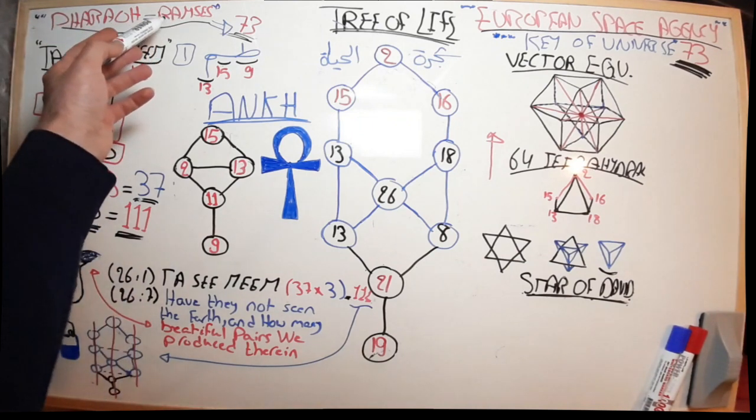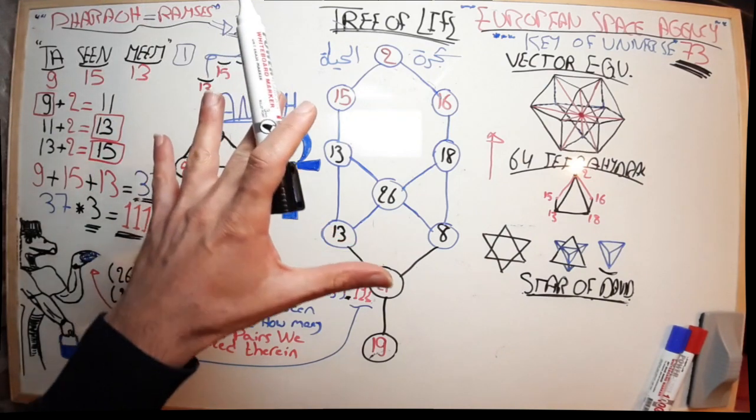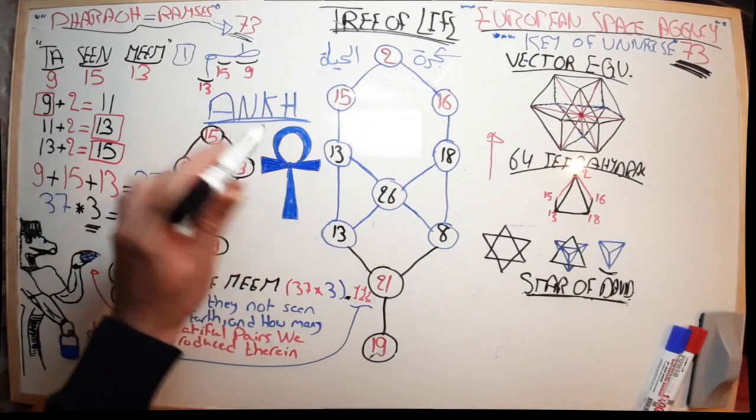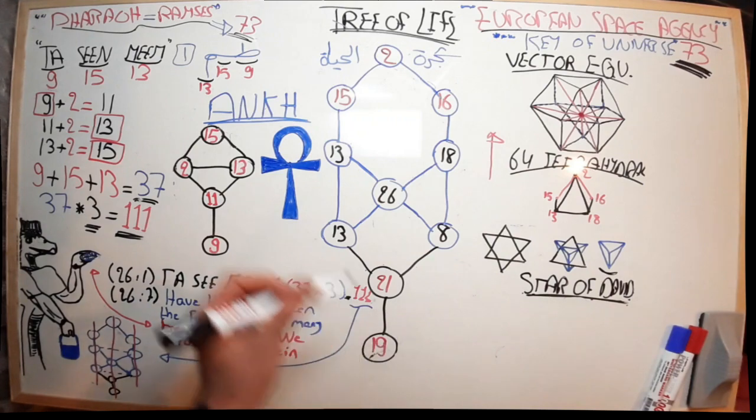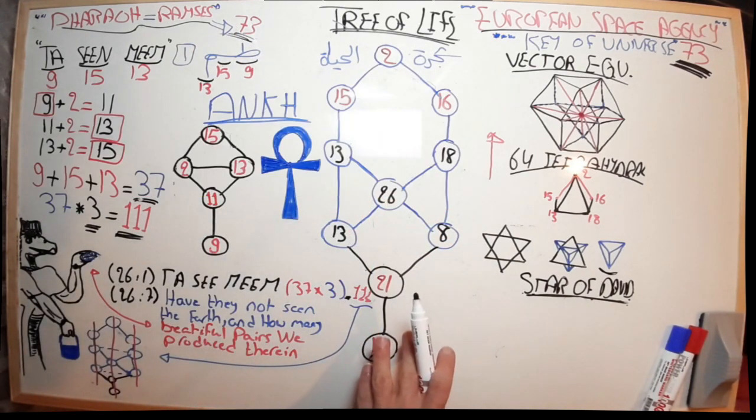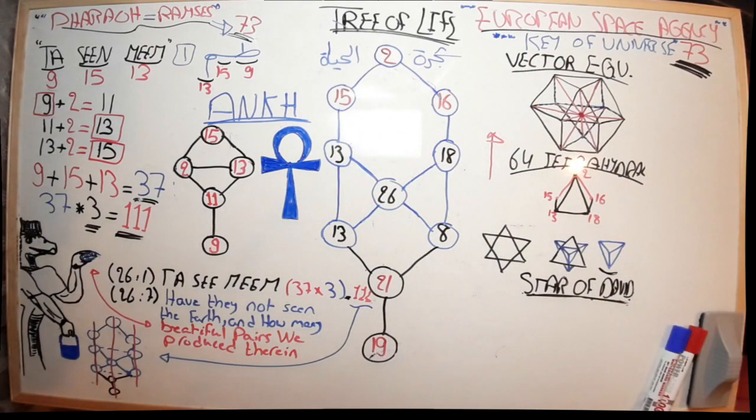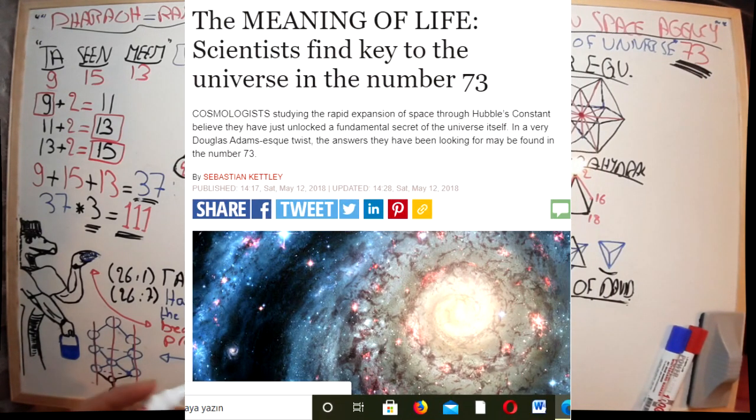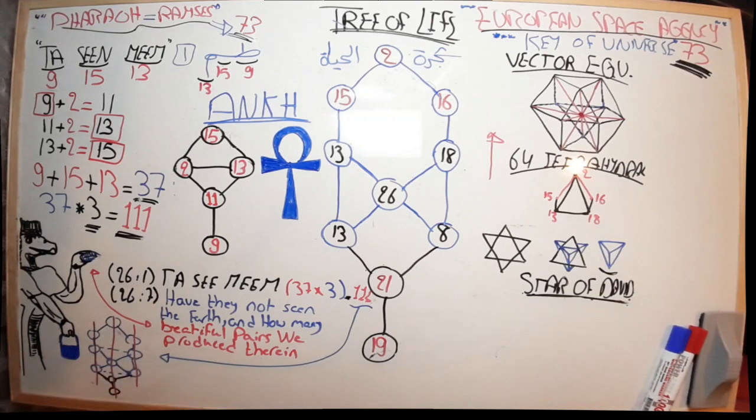Let's start by reminding ourselves about what we have talked about so far. We talked about the names of the pharaohs—Ramses—which each consists of five letters in the Arabic alphabet. When you sum their corresponding numbers in the Abjad, we got 73. How many 73s did we get last time from the Tree of Life? Five 73s.